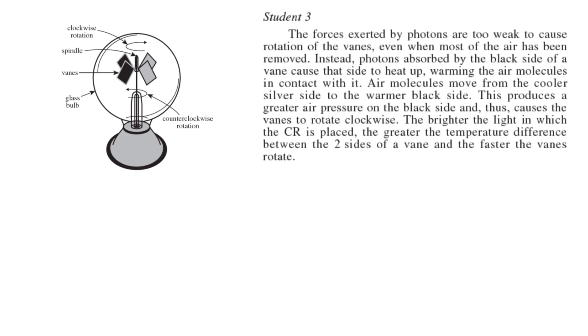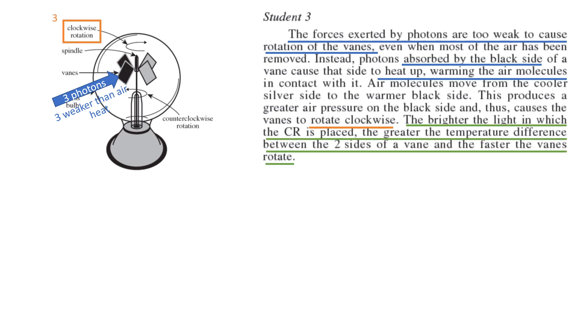Student three: the forces exerted by photons are too weak to cause rotation of the veins. This is different than student one and two. Even when most of the air has been removed, photons absorbed by the black side cause heat. So they still hit the spindles, but the heat is the main force, not just the photons of light. So the air molecules produce enough air pressure to rotate it clockwise. So clockwise, student three. And then the brighter the light, the greater the temperature difference. So more light creates more heat. So it still rotates faster.